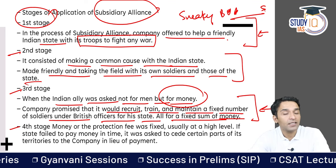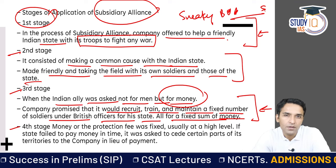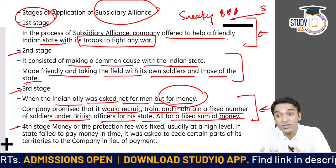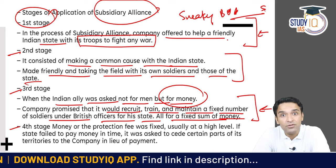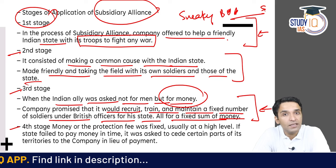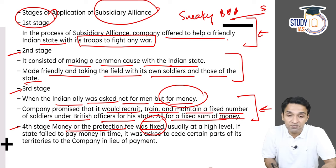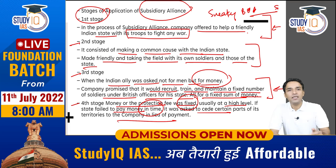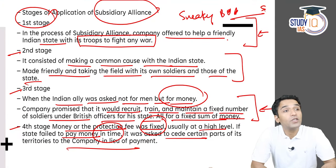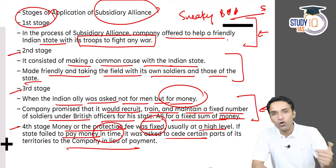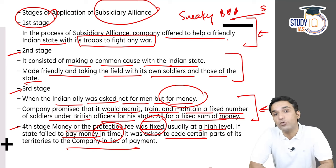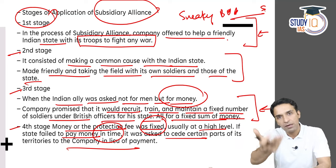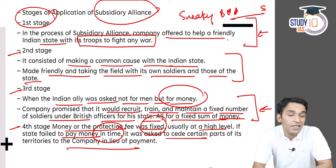Once the Indian state got used to free military help, Britishers would say: 'you pay us money, we will maintain soldiers for you.' If you are paying for somebody else's army, it is bound to end in disaster — somehow the princes didn't see that. The fourth stage: the money or protection fee was fixed at quite a high level. If the state could not pay, they had to give territory to the Company. So gradually the Company first helped, then asked for soldiers, then for money, and eventually took territory when payment failed.